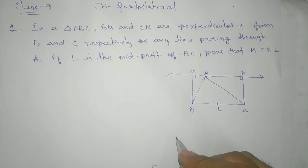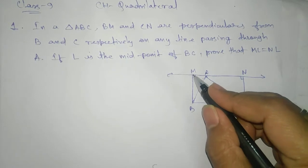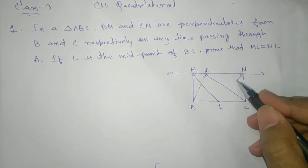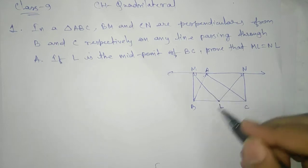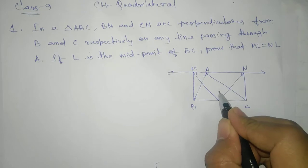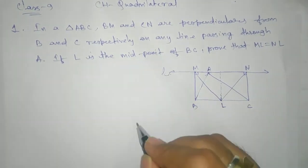Now they are saying that LM, so I am going to join here, and NL equal. So for this what we are going to do, we will construct one perpendicular on the line L.